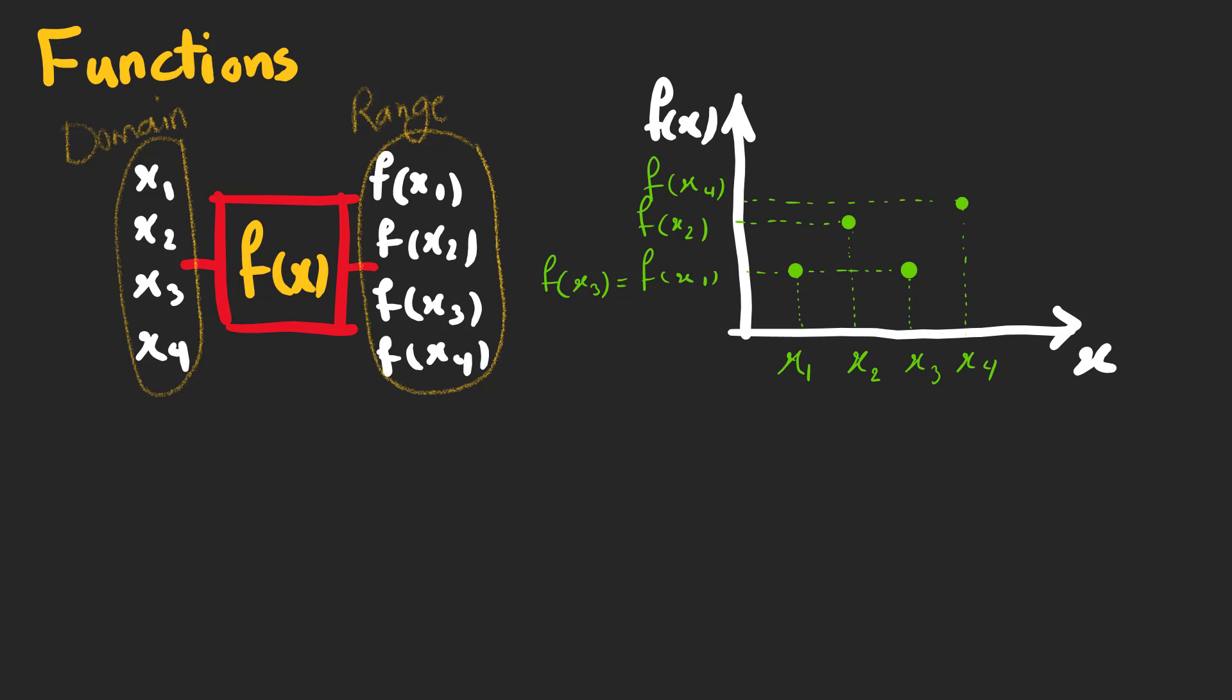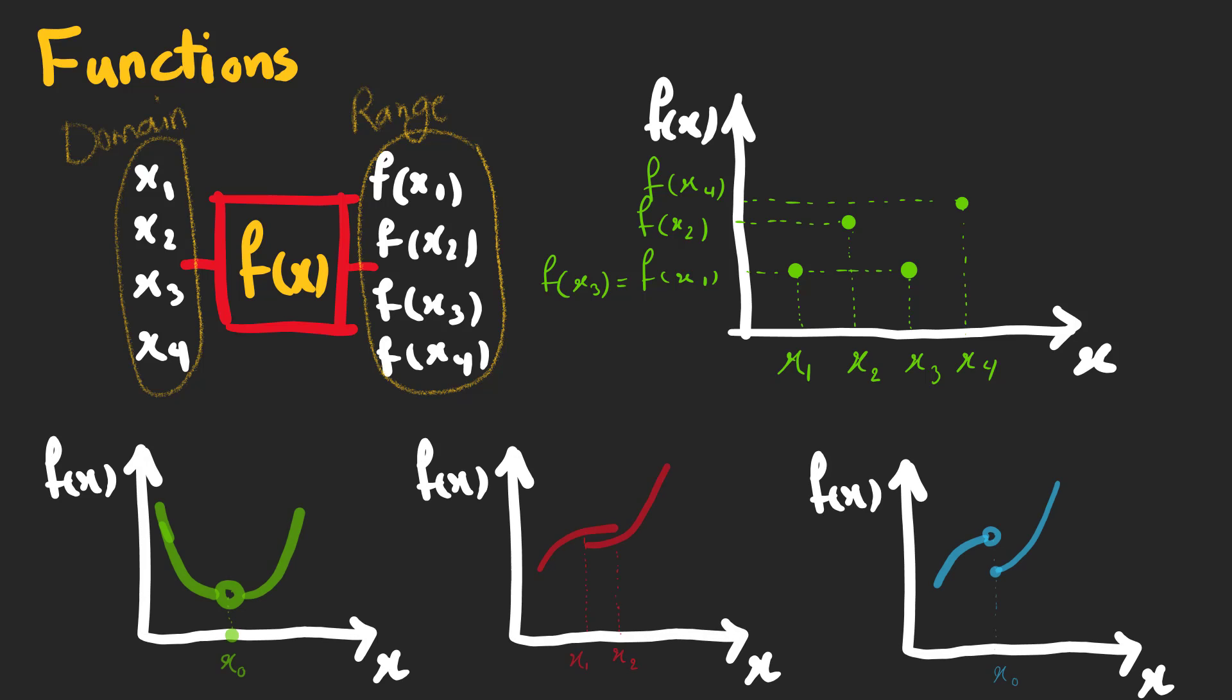We can illustrate it as a graph. It's very important to know that we must have just one output for each input and we can't have two different f of x for an x. Now look at these graphs. Which ones are functions?